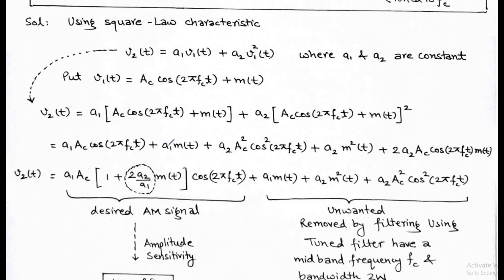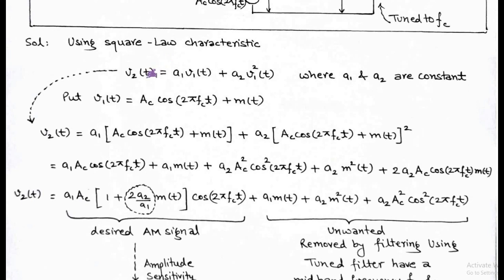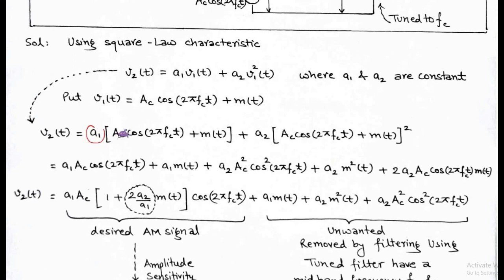According to the problem, there is a square law modulator having the characteristic v2(t) = a1·v1 + a2·v1². In place of v1(t), we substitute Ac·cos(2π·fc·t) + m(t), and we get v2(t) = a1·[Ac·cos(2π·fc·t) + m(t)] + a2·[Ac·cos(2π·fc·t) + m(t)]².